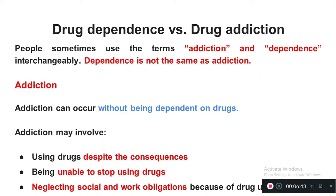Now we are going to learn the difference between addiction and dependence. Addiction can occur without being dependent on drugs — not all persons with addiction are drug dependent. Addiction involves using drugs despite the consequences; we use the drug knowing its consequences. Sometimes we are unable to stop using drugs even though they harm us. Because of the drug, people also avoid social and work responsibilities — these people are called addicts.